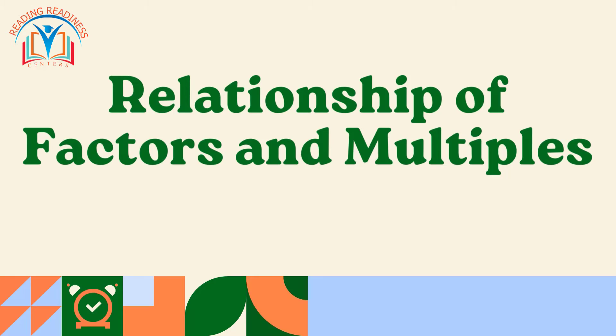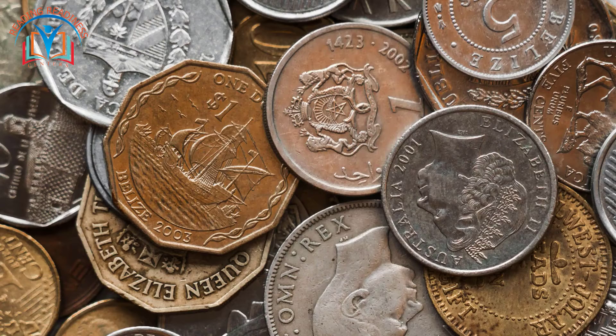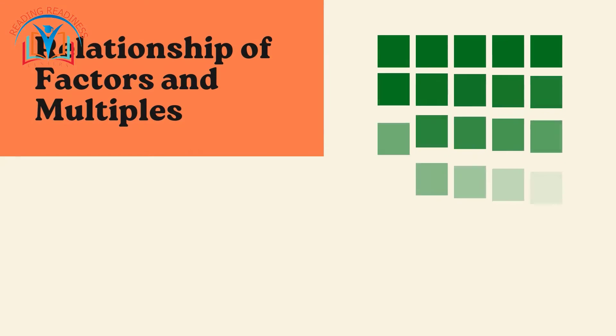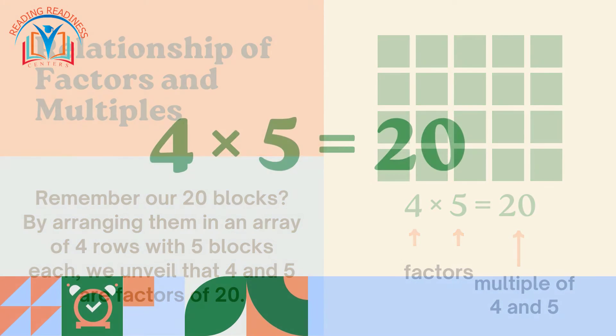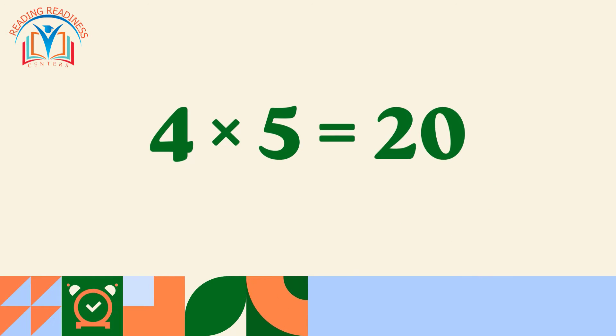Now, let's bridge the relationship between factors and multiples. Factors and multiples are like two sides of the same coin. Remember our 20 blocks. By arranging them in an array of 4 rows with 5 blocks each, we unveil that 4 and 5 are factors of 20. How? Because 4 multiplied by 5 equals 20. Consequently, 20 is a multiple of both 4 and 5.